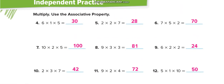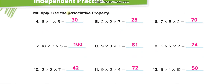For independent practice, I'll show you how to solve one question with a complete solution using the associative property. I find these two numbers easier to multiply first: two times two is four, times seven equals twenty-eight.